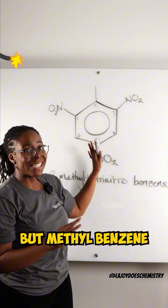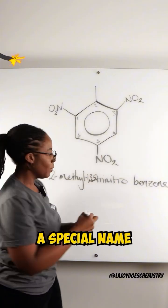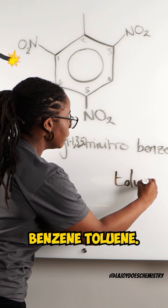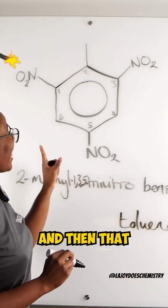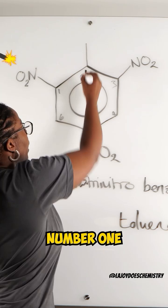But methylbenzene actually has a special name. We can call methylbenzene toluene. And then that would make this carbon number one.